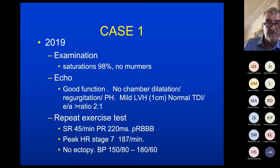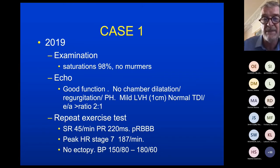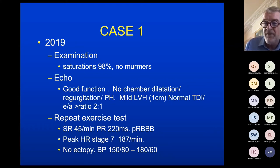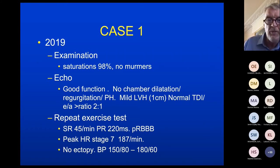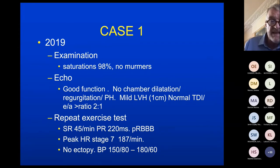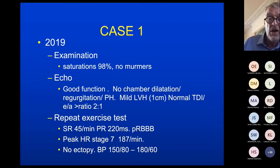We brought him back. He's fully saturated, no right-to-left shunting across the small ASD/PFO, no murmurs, good ventricular function, no chamber dilatation, mild LVH — borderline 13 millimetre septum. Normal TDI, normal strain imaging. We repeated an exercise test — much the same as his previous one. This time he reached stage seven, which is really quite significant — some professional athletes do not reach stage seven of the accelerated Bruce. Peak heart rate 187 per minute, no ectopy whatsoever, normal blood pressure response.